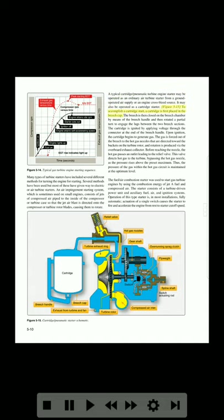To accomplish a cartridge start, a cartridge is first placed in the breech cap. The breech is then closed on the breech chamber by means of the breech handle and then rotated a partial turn to engage the lugs between the two breech sections. The cartridge is ignited by applying voltage through the connector at the end of the breech handle. Upon ignition, the cartridge begins to generate gas. The gas is forced out of the breech to the hot gas nozzles that are directed toward the buckets on the turbine rotor, and rotation is produced via the overboard exhaust collector. Before reaching the nozzle, the hot gas passes an outlet leading to the relief valve. This valve directs hot gas to the turbine, bypassing the hot gas nozzle as the pressure rises above the preset maximum, thus maintaining the pressure of the gas within the hot gas circuit at the optimum level.